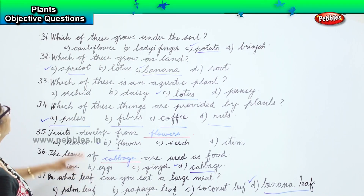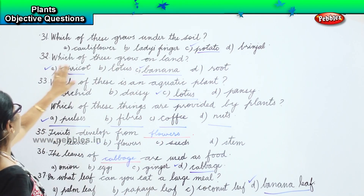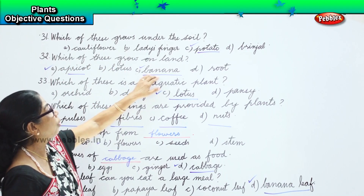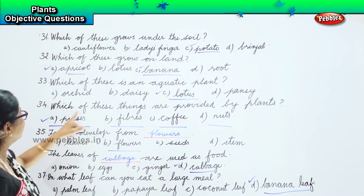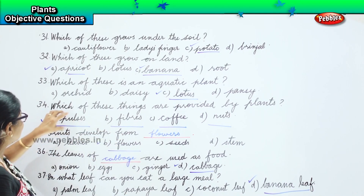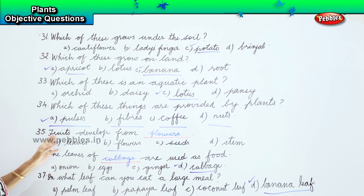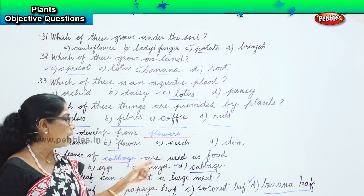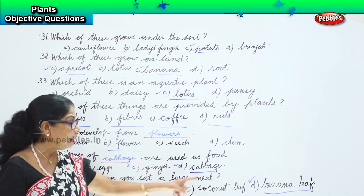Let's look at all our questions and answers. Which of these grows under the soil? Potatoes grow under the soil. Which of these grow on land? Apricot and banana grow on land. Which of these is an aquatic plant? Lotus is an aquatic plant. Which of these things are provided by plants? Pulses, fibers, coffee and nuts are all provided by plants. Fruits develop from flowers. The leaves of cabbage are used as food. On what leaf can you eat a large meal? Banana leaf.